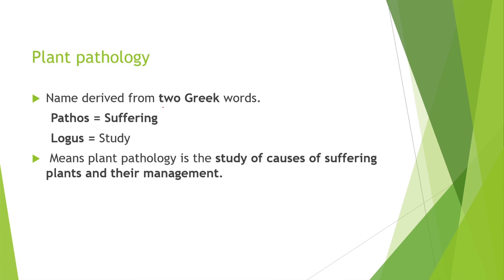Plant pathology: the word pathology is derived from two Greek words — pathos meaning suffering and logos meaning study. It is the study of causes of suffering of plants and their management, covering diseases in plants and their management.